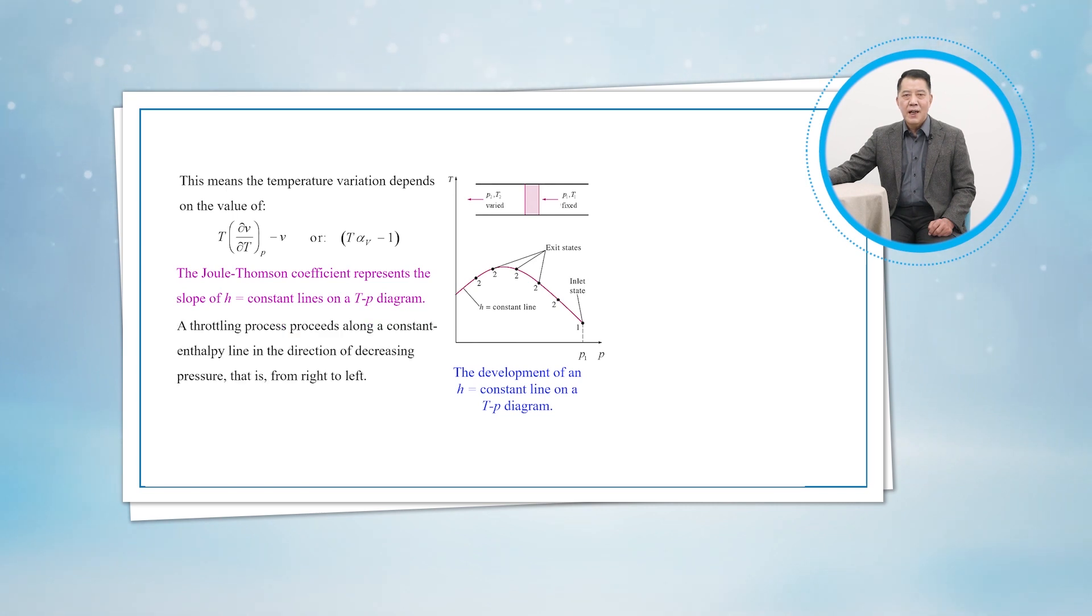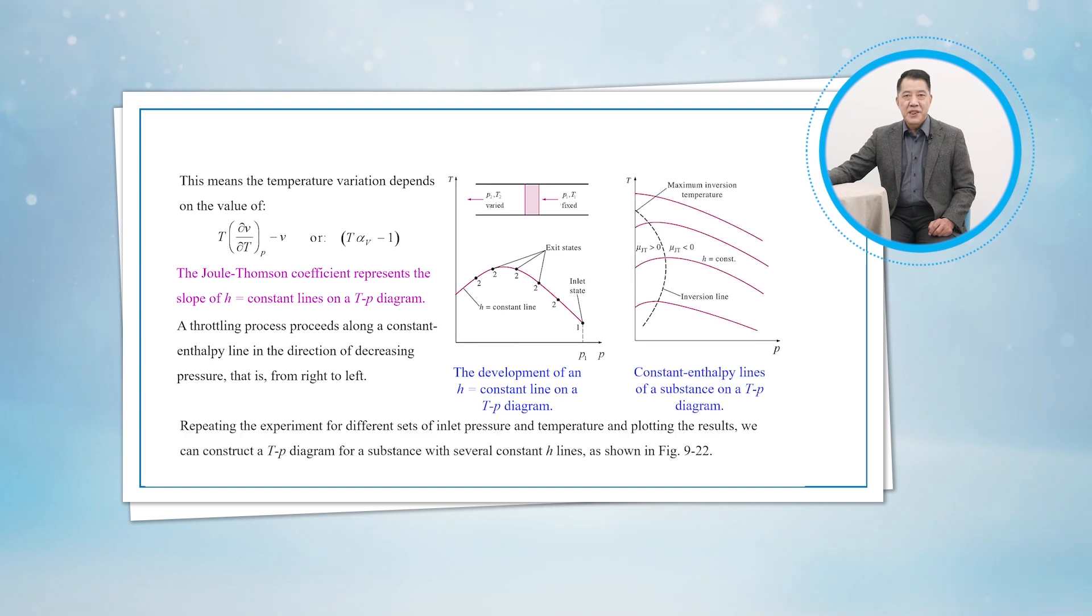A throttling process proceeds along a constant enthalpy line in the direction of decreasing pressure, from right to left. Repeating the experiment for different sets of inlet pressure and temperature, and plotting the results, we can construct a T-P diagram for a substance with several constant H lines.